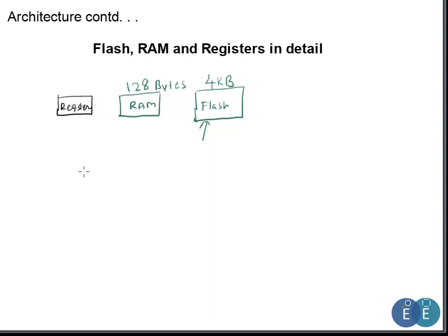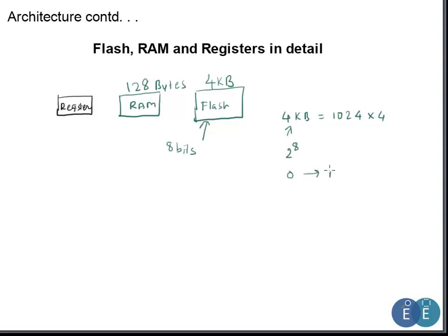Since it's an 8-bit controller, all opcodes are fetched 8 bits at a time. The flash is 4 kilobytes, which is 1024 × 4. To address 4 kilobytes of memory we require 12 bits, and since it's 8-bit wide, the highest address would start from 0x000 and end at 0xFFF, giving us 4 kilobytes.